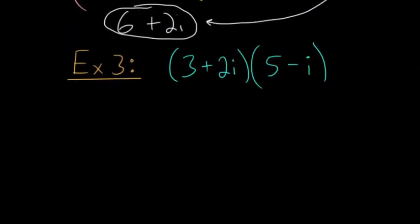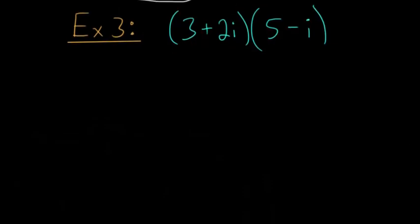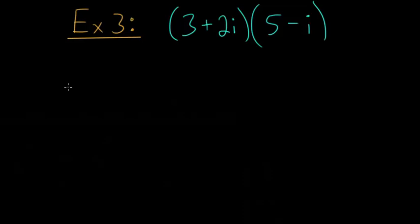And let's do one final example, but this time we're going to do multiplication. And when you're multiplying two complex numbers, you can essentially use the FOIL method, since it's going to work the exact same as multiplying any two normal binomials.